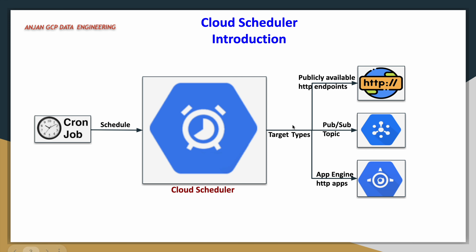In the demo, we'll cover two examples. In the first example, I'll create a Cloud Function with an HTTP trigger type that prints a simple message, and then trigger that Cloud Function using Cloud Scheduler. In the second example, I'll create a Pub/Sub topic and subscription, then use Cloud Scheduler to publish messages into the topic on a scheduled basis, and pull those messages to test it.